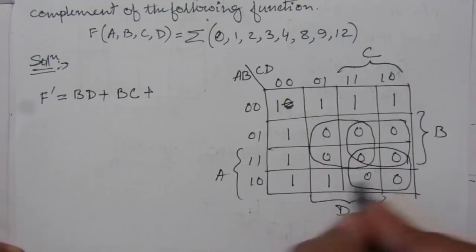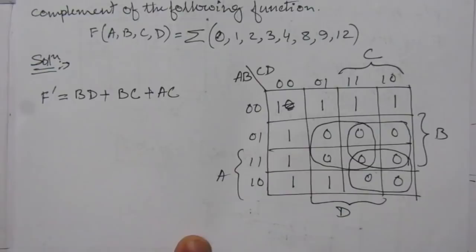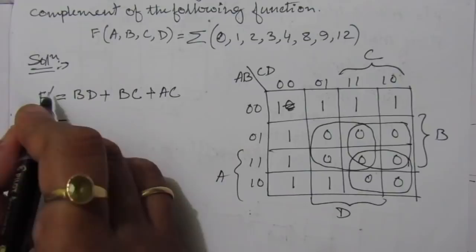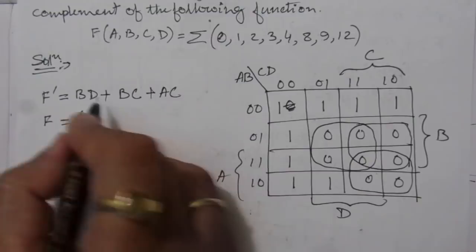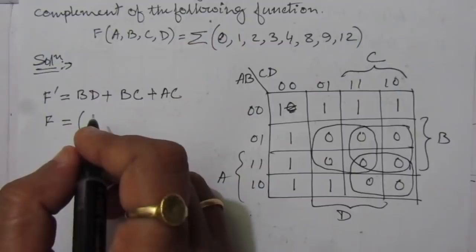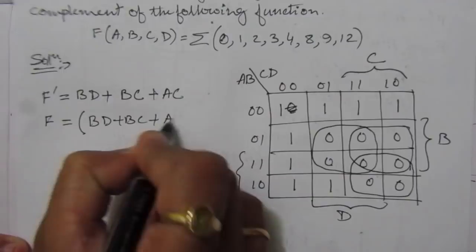So F complement equals BD + BC + AC. Now to find the function F, we have to take the complement of F complement. So F equals the complement of (BD + BC + AC), which gives us the whole expression under one complement bar.